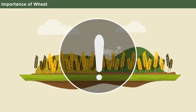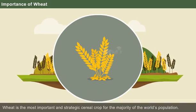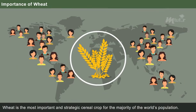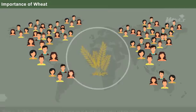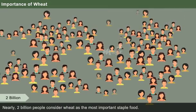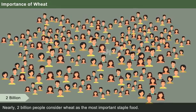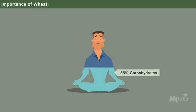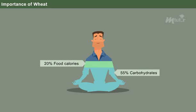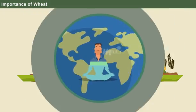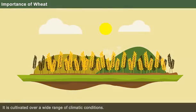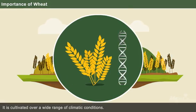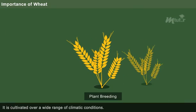Let us discuss the importance of wheat. It is said that wheat is the most important and strategic cereal crop for the majority of the world's population. Nearly 2 billion people around the world consider wheat as the most important staple food. Wheat provides nearly 55% of the carbohydrates and 20% of the food calories consumed globally. It is cultivated over a wide range of climatic conditions, and therefore understanding its genetics is of great value for plant breeding purposes.